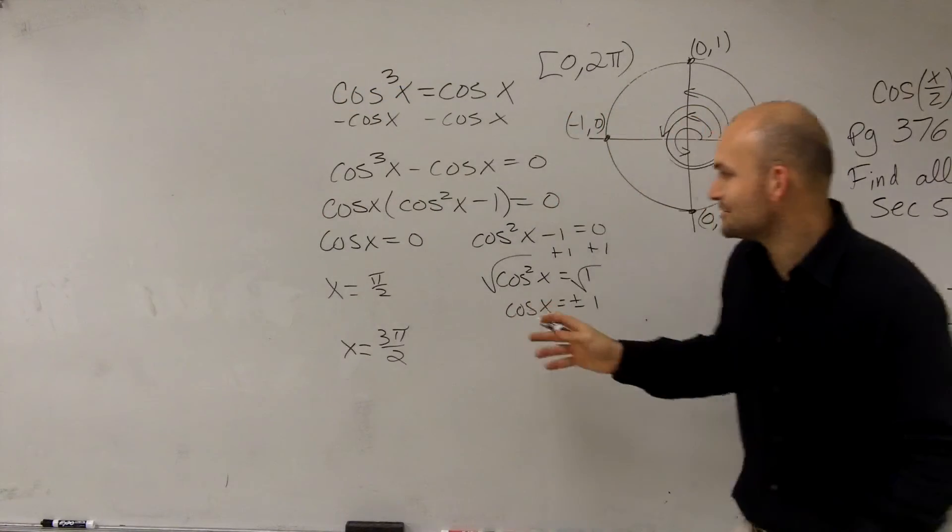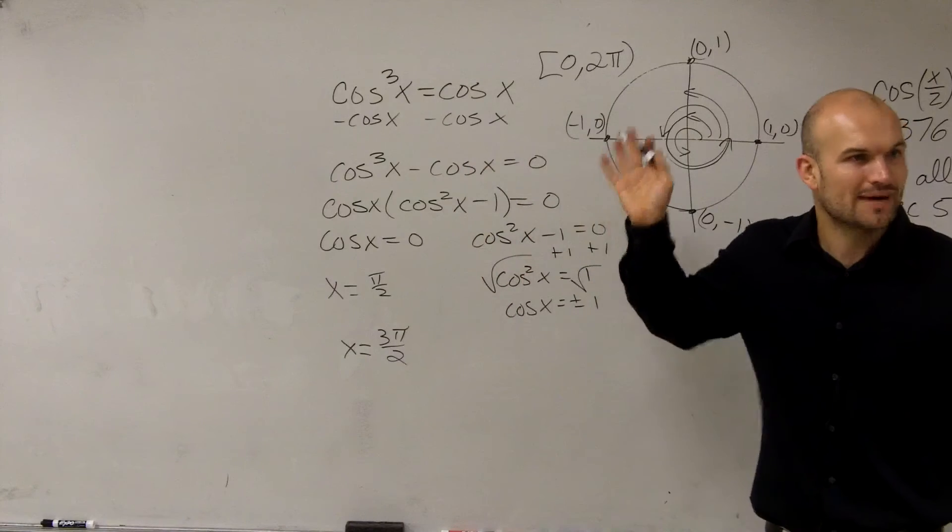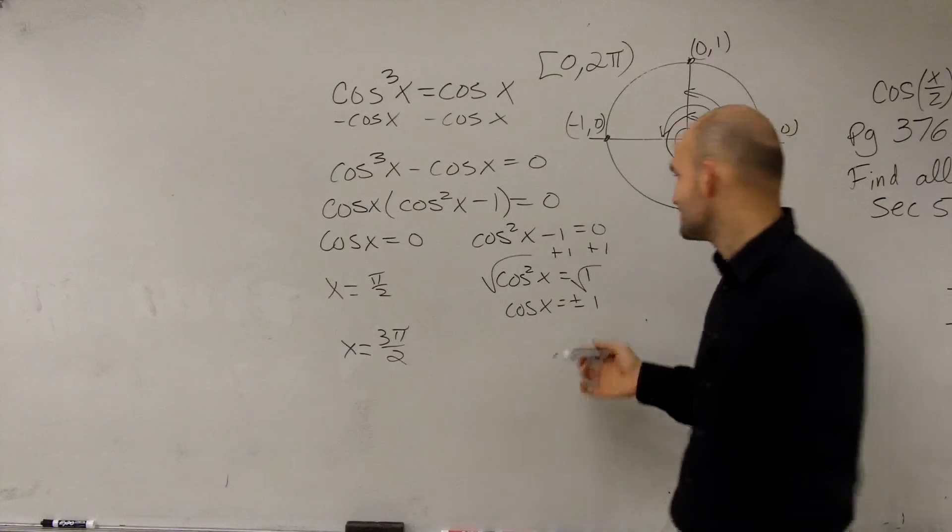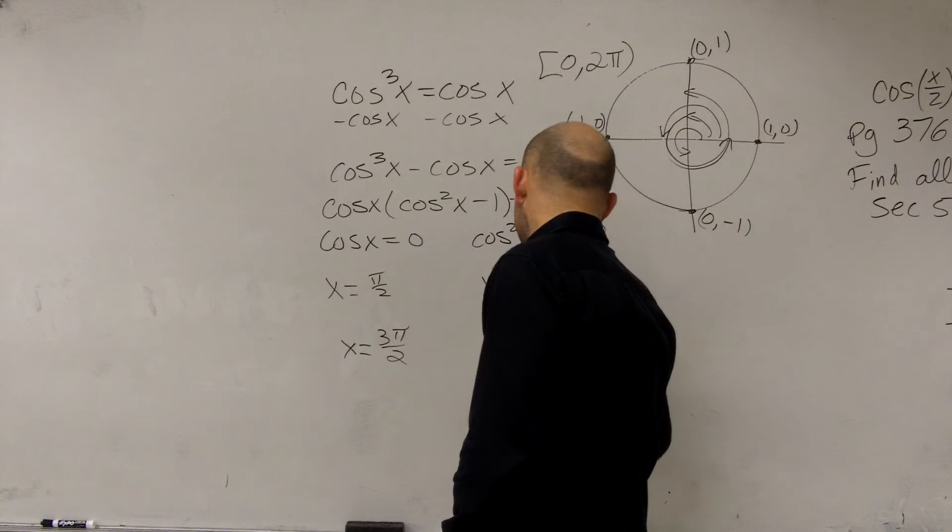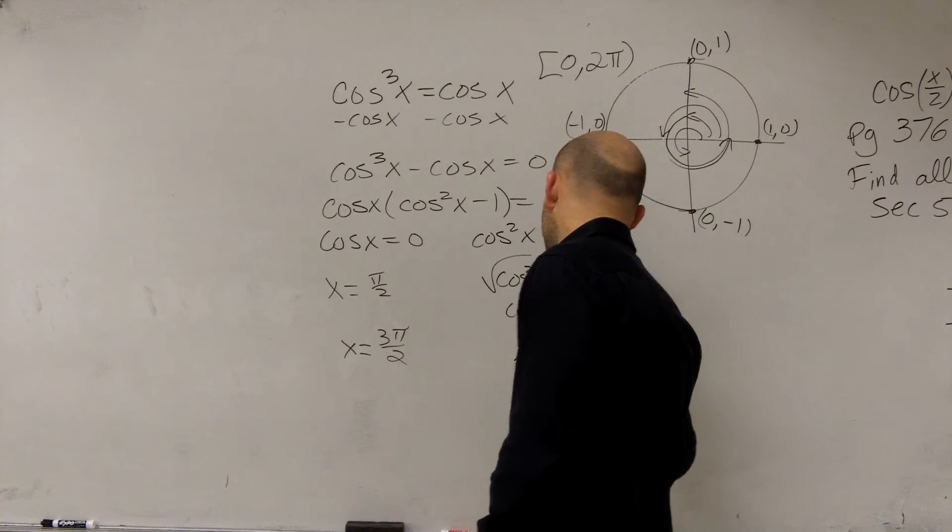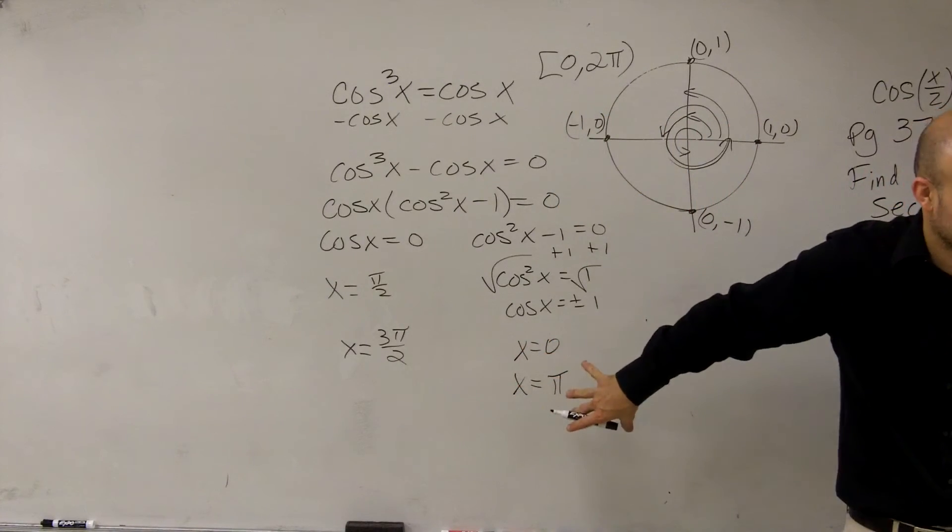For your homework, all you guys had to do was just tell me where they were on the unit circle. So you had your answers π/2, 3π/2, and then you can just say x = 0 and x = π. For your homework, that's all you had to do.